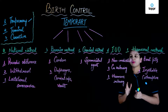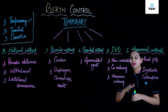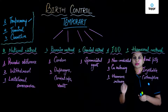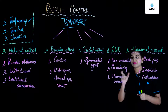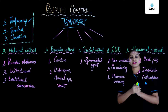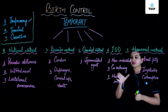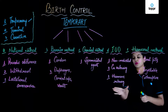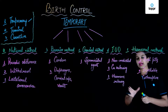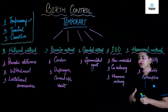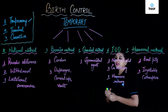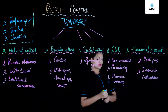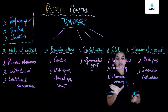Next is the copper releasing IUD. It contains copper which decreases the motility of sperm, thereby preventing pregnancy. Last is the hormone releasing IUD, which prevents implantation and also kills the sperms.